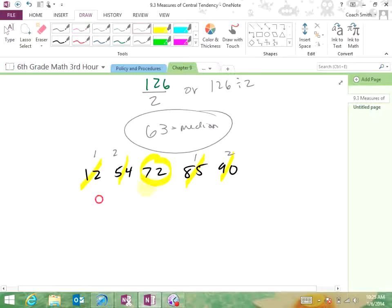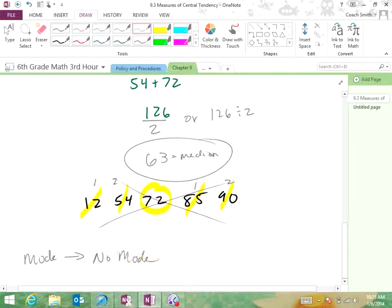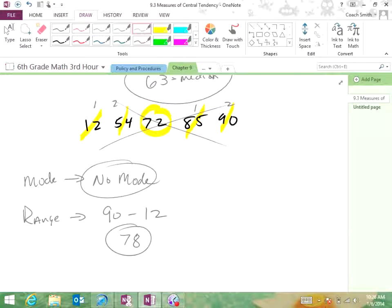So, let's go back. Let me X that out. Now, I need the mode. In our original set of numbers, 12, 54, 72, and 90. Is there a mode? No. So, we put no mode. That's your answer. Your range is 90 minus 12. 90 minus 12. Raise your hand. Don't be yelling out numbers. Tristan. 78. So, the range is 78. So, there's your four things. Your mean, your median, your mode, and your range.